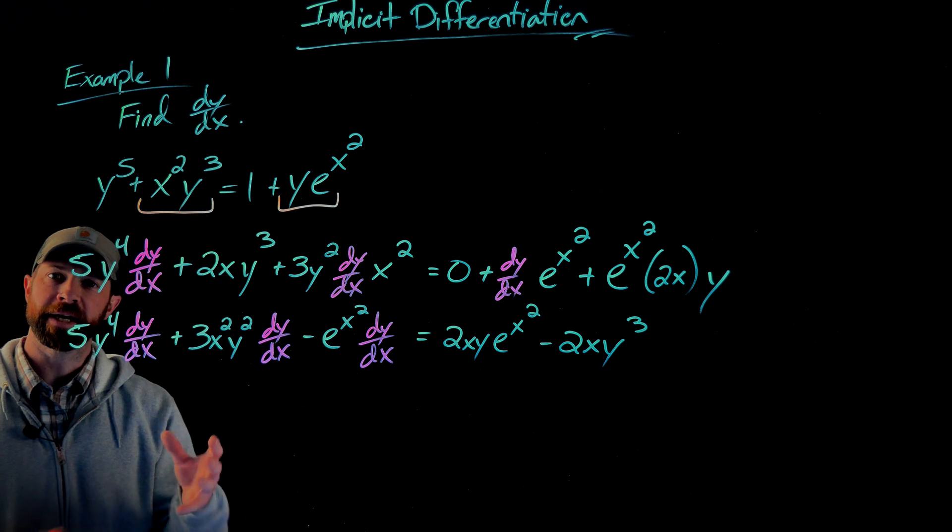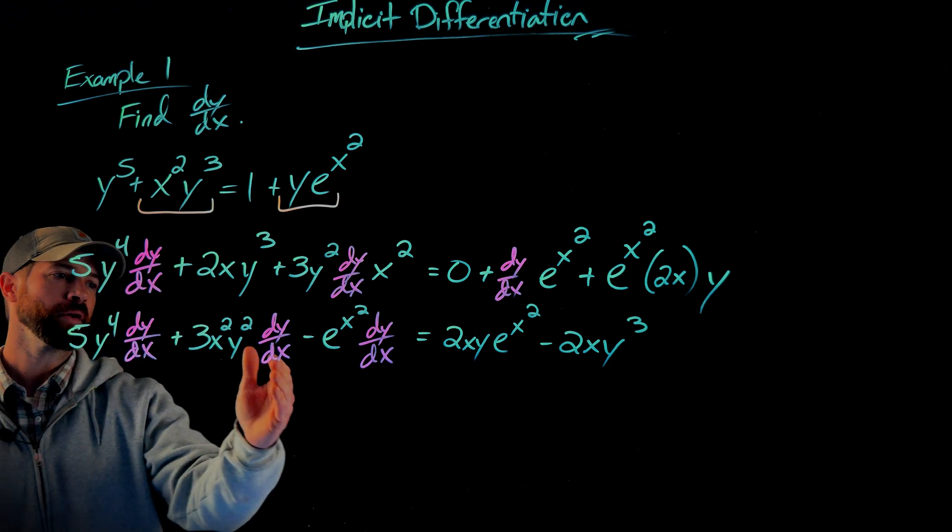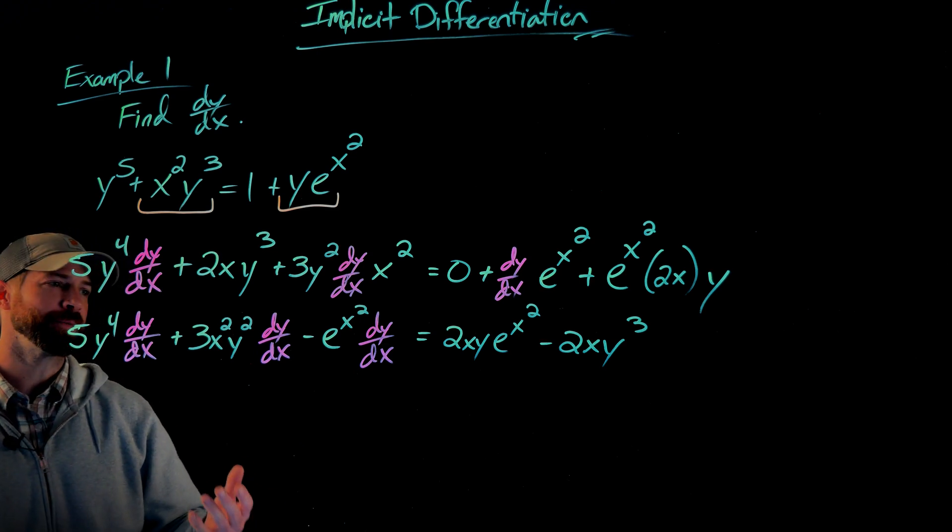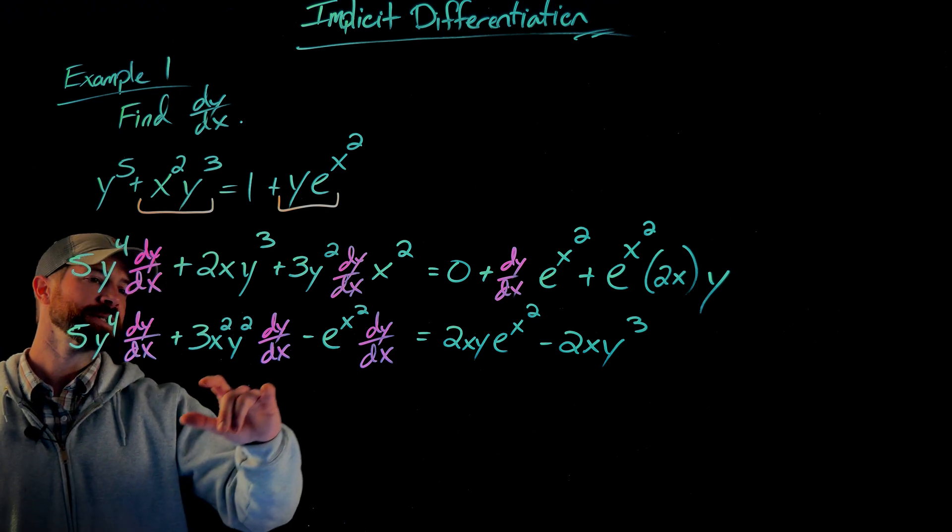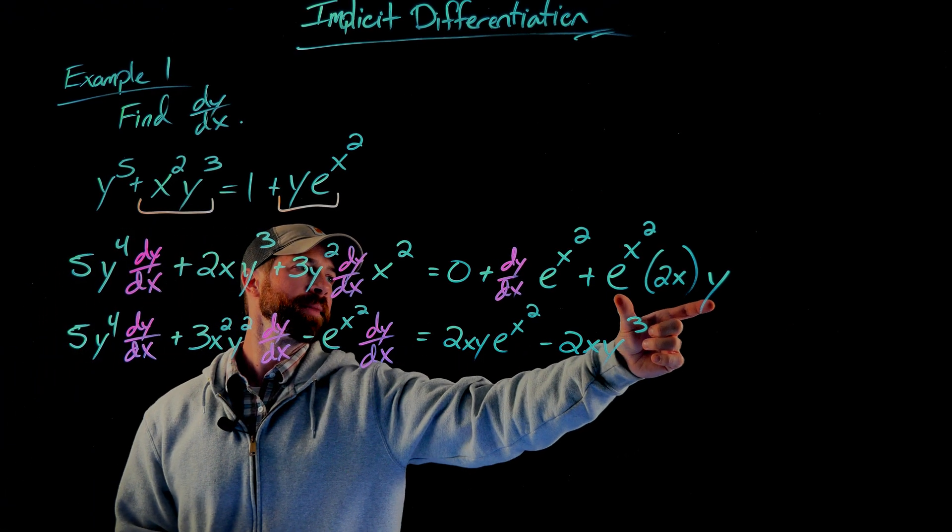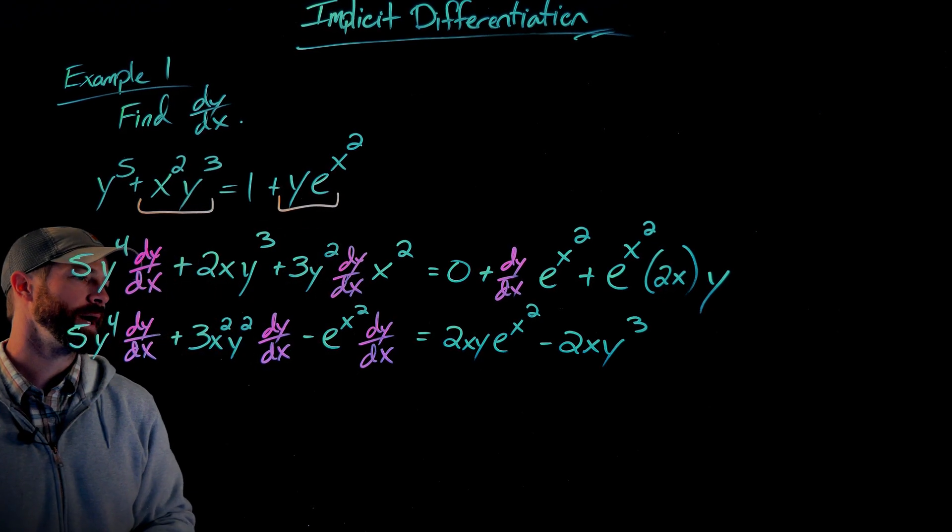So there I've done it. I've swapped those two terms. Again, my job was to get all of the terms that have a dy/dx on one side. You'll notice I cleaned things up a little bit. Like for instance, this term right here is simply this term. I just put the 2xy out in front of this e to the x squared part.